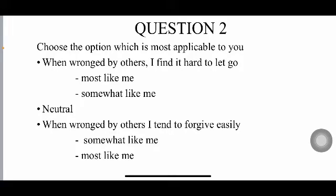The second question: 'When wronged by others, I find it hard to let go' — meaning when somebody makes a mistake, you won't forgive them easily. 'Most like me' or 'somewhat like me' for that. The other side: 'When wronged by others, I tend to forgive easily' — meaning you forgive them easily, somewhat or most like you. If you're neither, go with neutral. You pick only one of the five options.